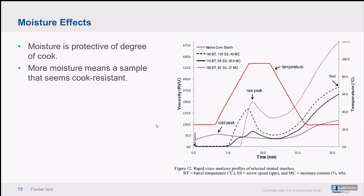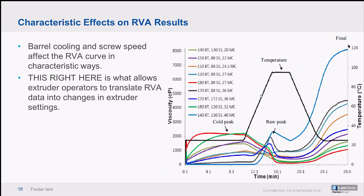A quick note on moisture effects: moisture is protective of the degree of cook. The more moist a sample is, the more cook-resistant it will seem. The highest moisture content sample — even with a medium barrel temperature and the highest screw speed — exhibits the most raw-like behavior because of that moisture protection. Barrel cooling and screw speed changes have characteristic effects on the RVA curve, and this is what allows extruder operators to look at RVA results and make educated decisions about changes to extruder settings.